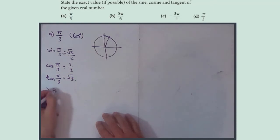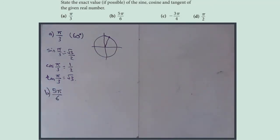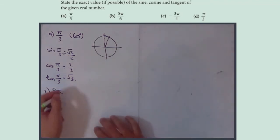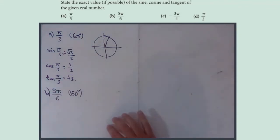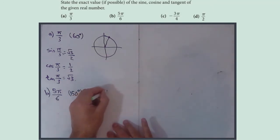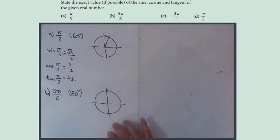Part b: 5π/6. π/6 is 30 degrees because π is 180, so 5π/6 must be 5 times 30, which is 150 degrees. I'll now draw a circle — I didn't really need it for the first one but I definitely want it for this one.